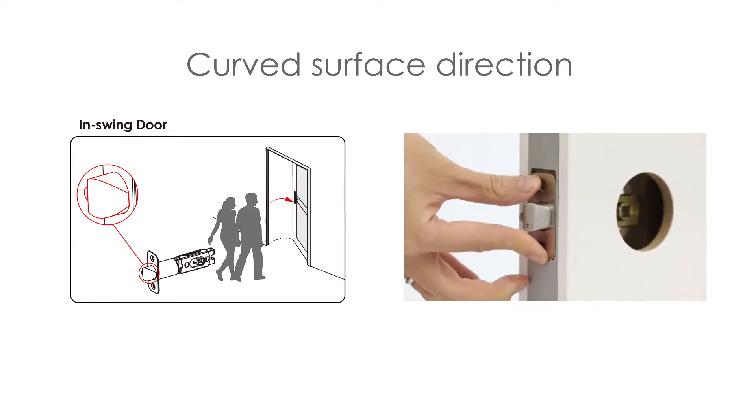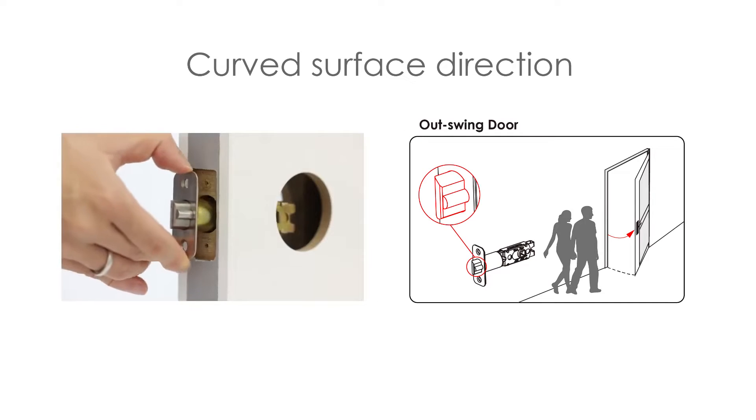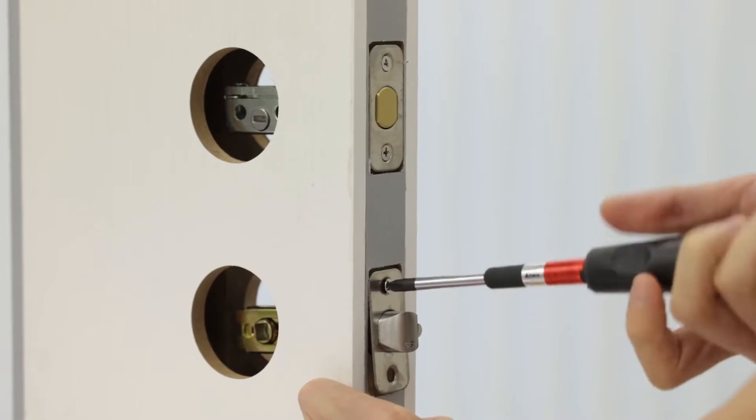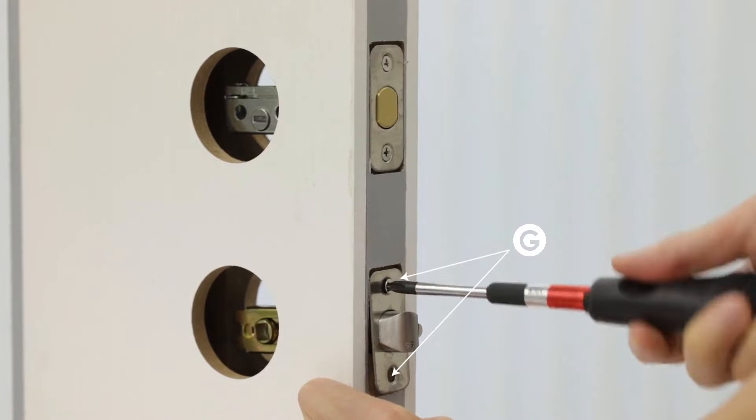For in-swing doors and for out-swing doors. Install latch bolt F to the bottom hole and secure with two screws G.